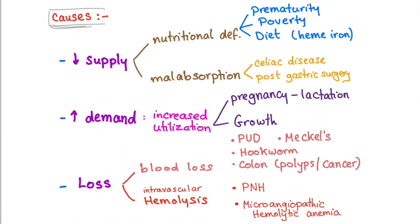Old age presents the same problem as in kids. Diet is also a factor — some people who are strict vegans are not getting enough heme iron.